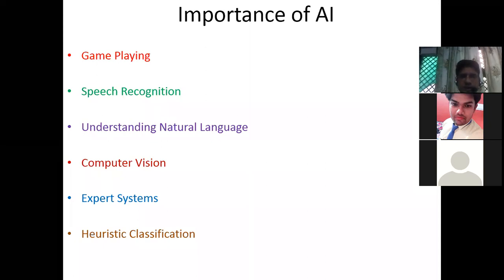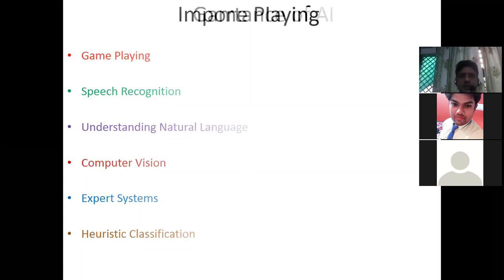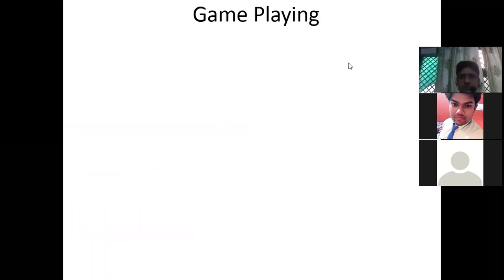The key areas of artificial intelligence are: game playing, speech recognition, understanding natural language, computer vision, expert systems, and heuristic classification. Now let's see how we are using artificial intelligence in game playing.